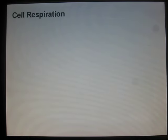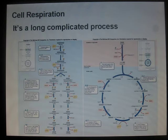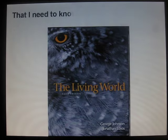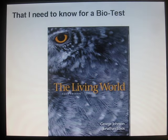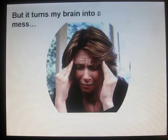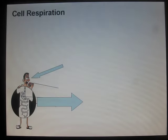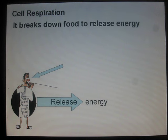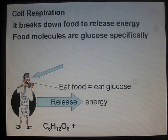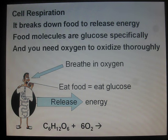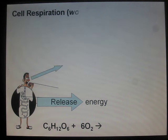Cell respiration. It's a long, complicated process that I need to know for a bio test. But it turns my brain into a huge, big mess. Cell respiration — it breaks down food to release energy. Glucose molecules are specifically needed. You need oxygen to oxidize thoroughly. Cell respiration.